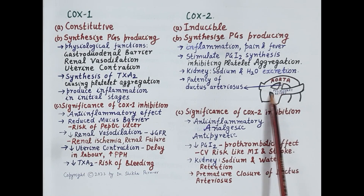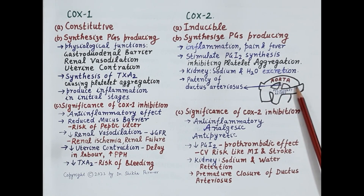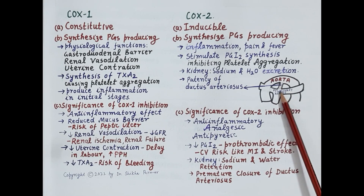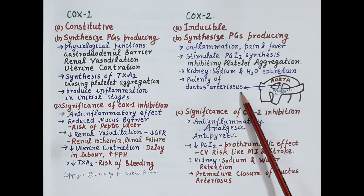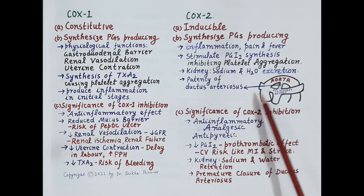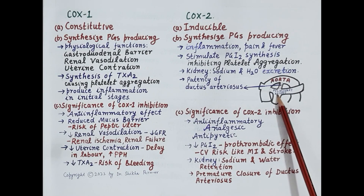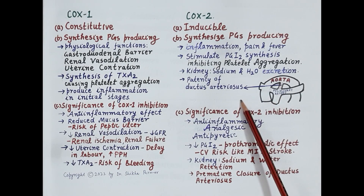Prostaglandins produced by COX-2 are also required for the patency of the ductus arteriosus — that means to keep the ductus arteriosus open. The ductus arteriosus is a blood vessel that connects the pulmonary artery with the aorta. It remains open in a fetus and closes as soon as the baby is born. Prostaglandins produced by stimulation of COX-2 keep this ductus arteriosus open in the fetus.